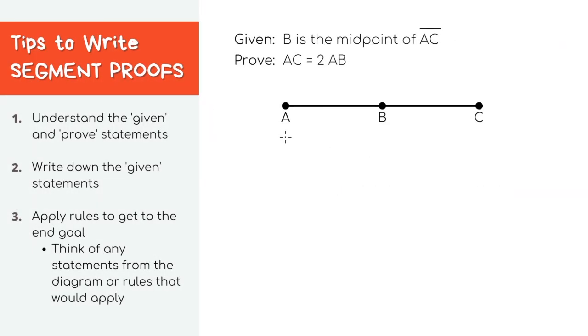Here we have a problem asking us to do a proof on a statement about this line segment. The first tip is just to understand the problem itself. In our given statement, this is something that is definitely true, and you're going to base all of the next steps in your proof on the statement. It says that point B is the midpoint of our line segment AC.